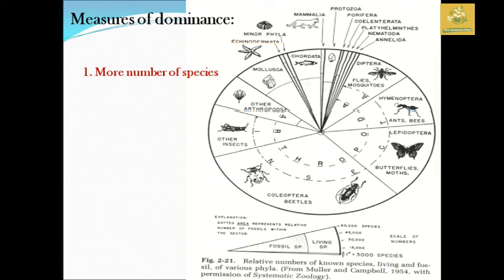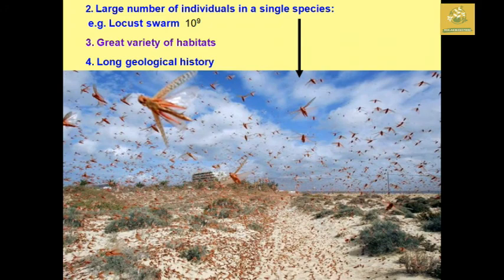In the 15th century, only about 72% of insects are present. The most important reason is the number of individuals in a single species. For example, there is a locust swarm — one locust swarm is 10 to the power of 9.